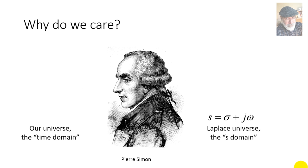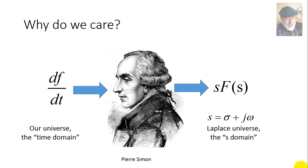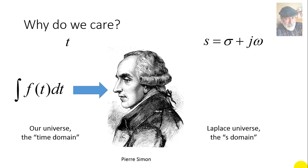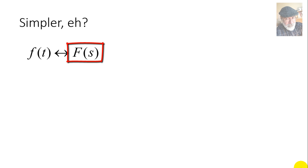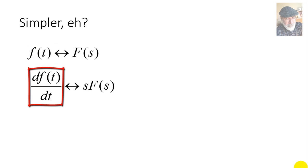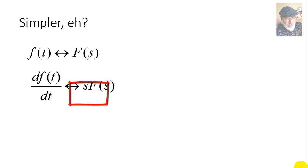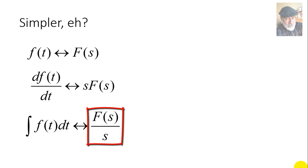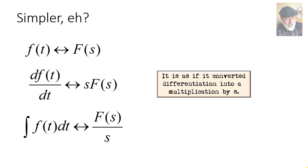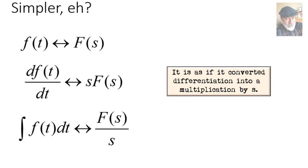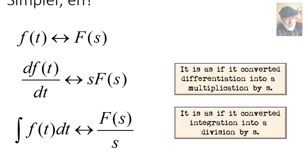Why do we care about going through all that painful transformation from t to s? In a nutshell, because when we differentiate in our world, the corresponding function of s gets just multiplied by s. And when we integrate a function of time, its corresponding function of s gets merely divided by s. That's very simple. When we differentiate f with respect to time, we multiply its transform by s. When we integrate f in time, we divide its transform by s. It's as if Laplace converted differentiation into multiplication by s and integration into division by s.